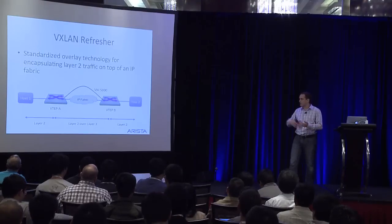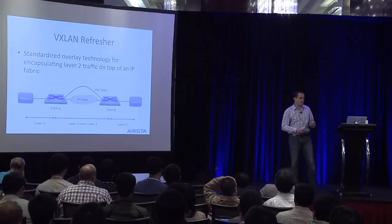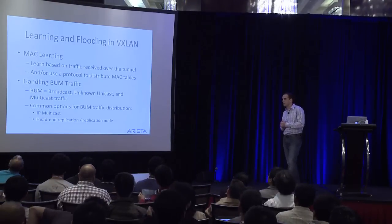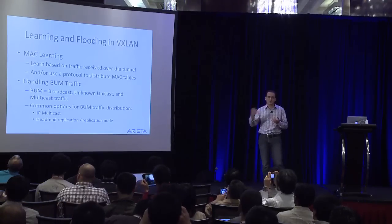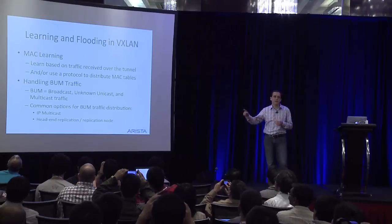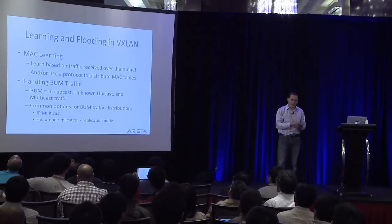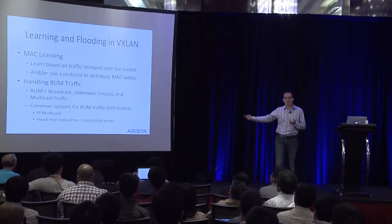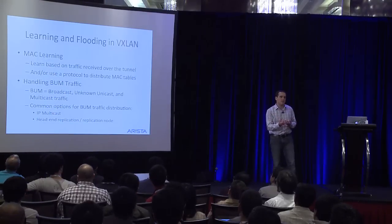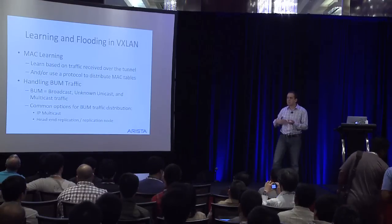VTEP B decapsulates the packet and sends the original packet to host 2, who receives it not knowing there was any encapsulation going on. This is pretty standard for network virtualization in general. One easy way to think about traffic flows is to think about how standard layer 2 .1q VLANs work and then apply that to VXLAN. This simplified picture is missing two basic things: learning and flooding. For MAC learning, there are two options. One is to learn packets over the tunnel — you receive a packet, decapsulate it, get the sender's IP address, look at the inner packet's MAC address, and now you know what VTEP IP to send encapsulated packets to.